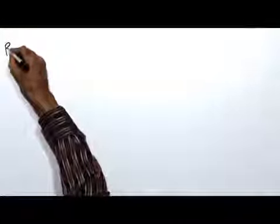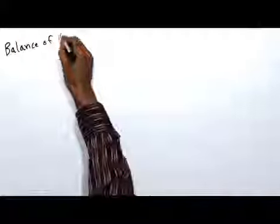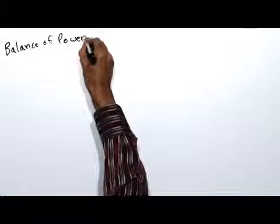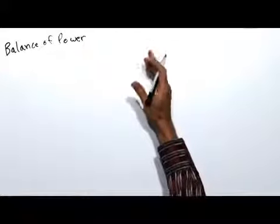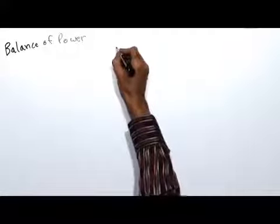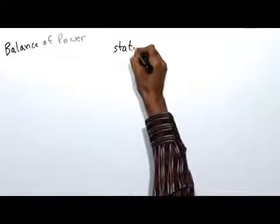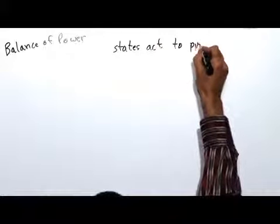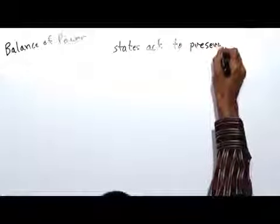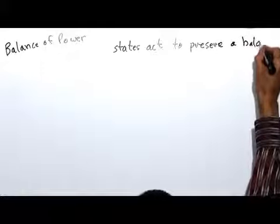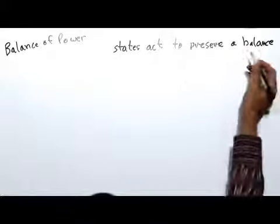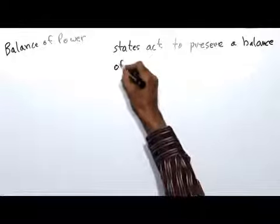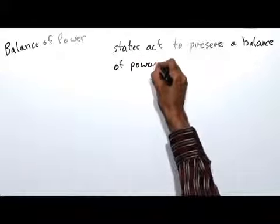The balance of power can be simply described as a theory of state behavior. What that really means is that states act to preserve a balance, or if you like, an equilibrium of power in the system.